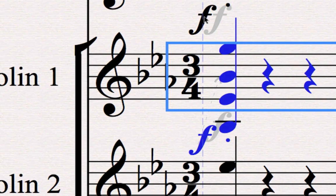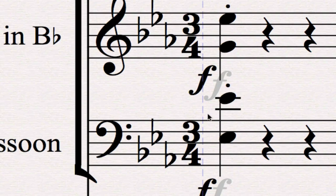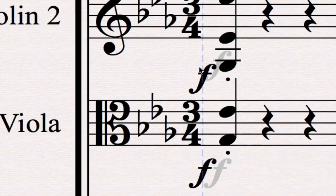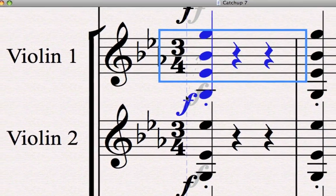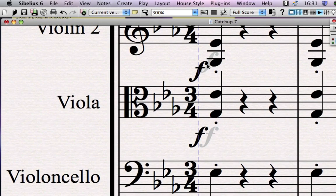Now another thing you might notice if you look at these dynamics that I've just pasted in is that there's a gray version of each dynamic next to the one that we can see. That's because Sibelius automatically copied the position from the flute part when it pasted those fortes, but then realized that they would clash if it put them at that exact point. For instance, that one would bump into that note on a ledger line. So it's moved them away from the notes to avoid the clash, and this is a new feature in Sibelius 6 called magnetic layout. It's also kept all of them in a nice line. You can see the dotted line between them showing an alignment that Sibelius has found for the dynamics between each individual part.